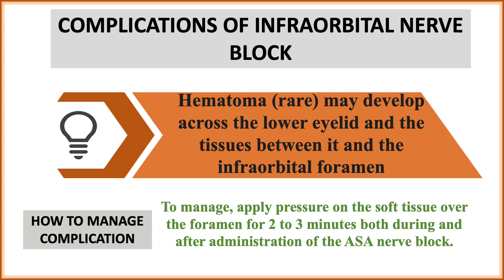Complications of infraorbital nerve block: hematoma is the main complication, though it is very rare. It may develop across the lower eyelid and the tissue between it and the infraorbital foramen. To manage this complication, apply pressure on the soft tissue over the foramen for two to three minutes, both during and after administration of the nerve block.